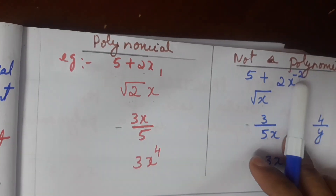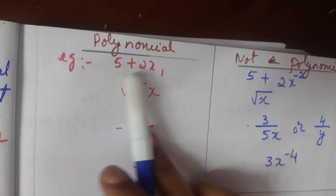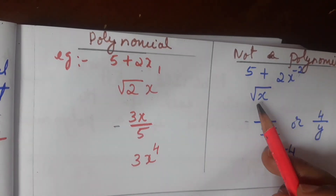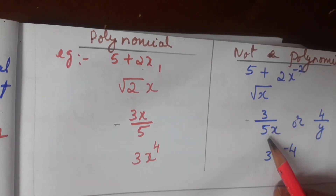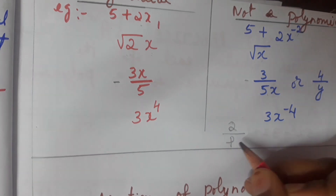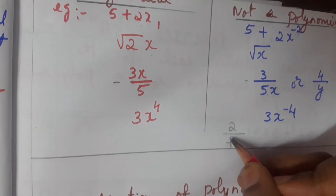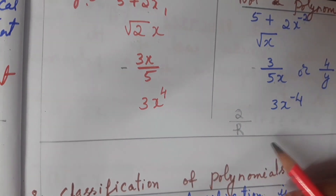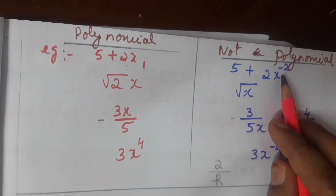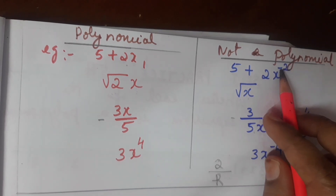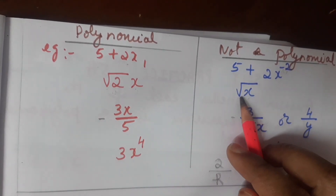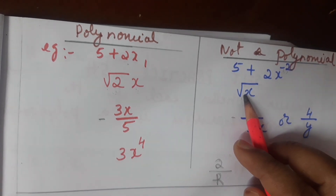If polynomial or not: 5 plus 2x is a polynomial because it is a binomial. The main thing is negative exponent — negative power, square root with a variable, and variable in the denominator should not be there. So square root 5 plus 2x is a polynomial, but 5 plus 2x to the power minus — this is a minus exponent — so it is not a polynomial. Square root of 2x: outside the square root it is a polynomial, but inside the square root x is not a polynomial. Any variable inside the square root means it is not a polynomial.